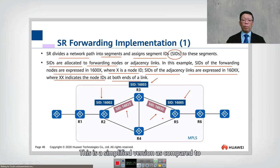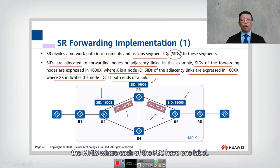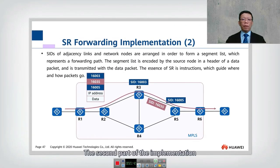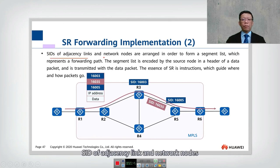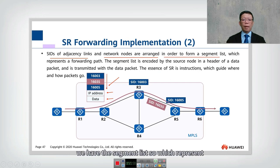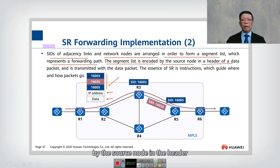This is a simplified version compared to MPLS, where each FEC has one label. The SIDs of adjacency links and network nodes are arranged in order to form a segment list. You can see the segment list at the bottom, alongside a traditional IP address header. The segment list represents a forwarding path and is encoded by the source node in the header of a data packet, transmitted together with the packet.